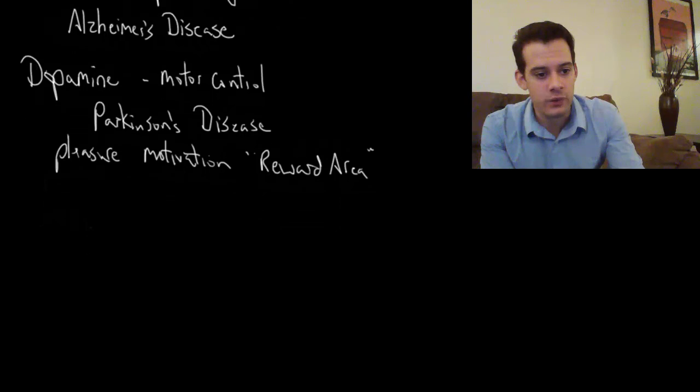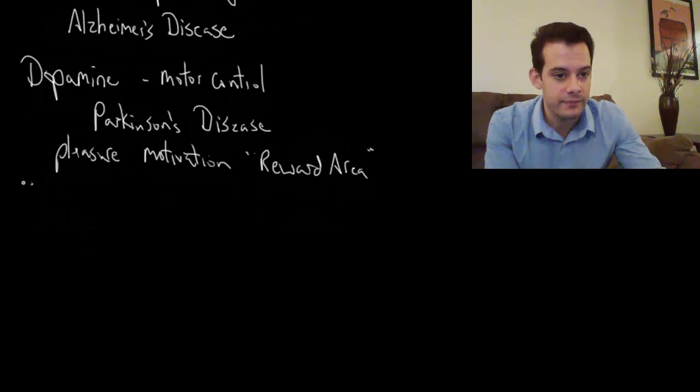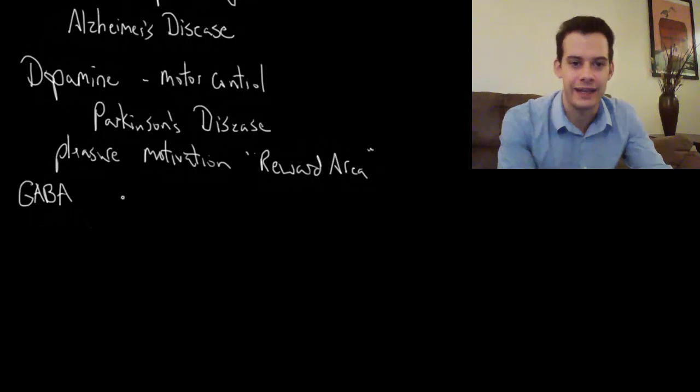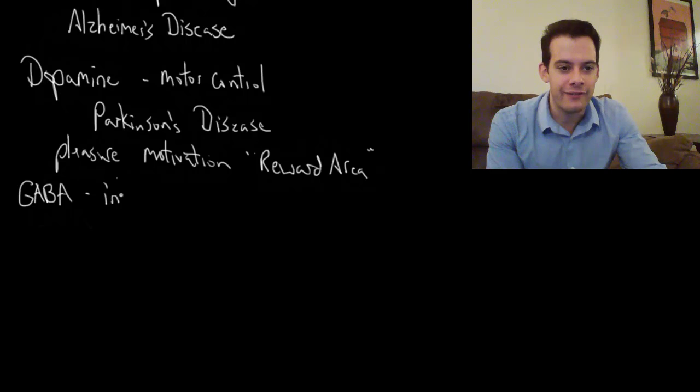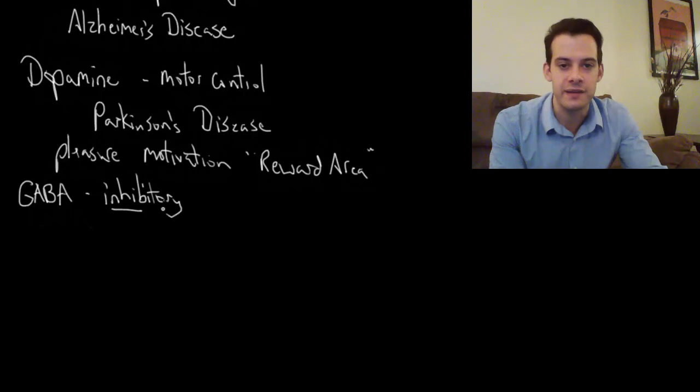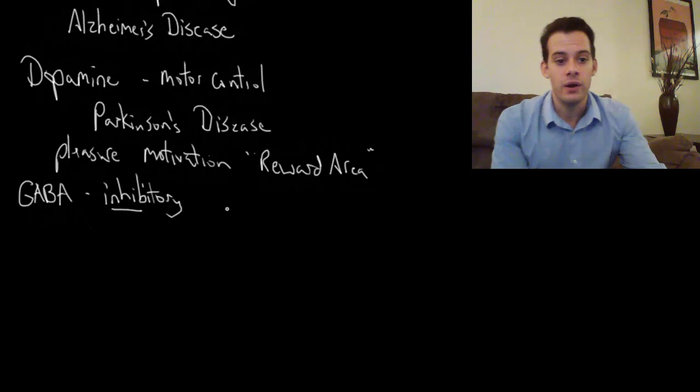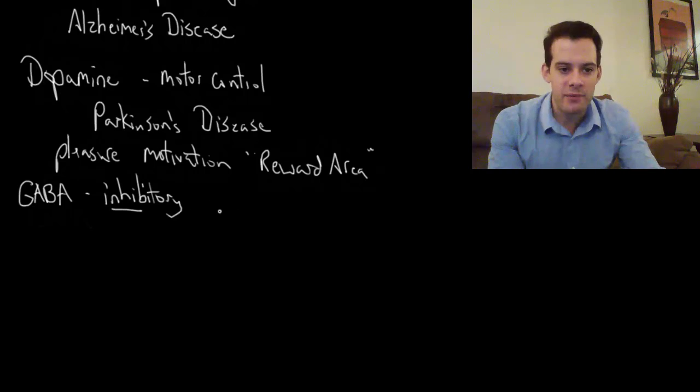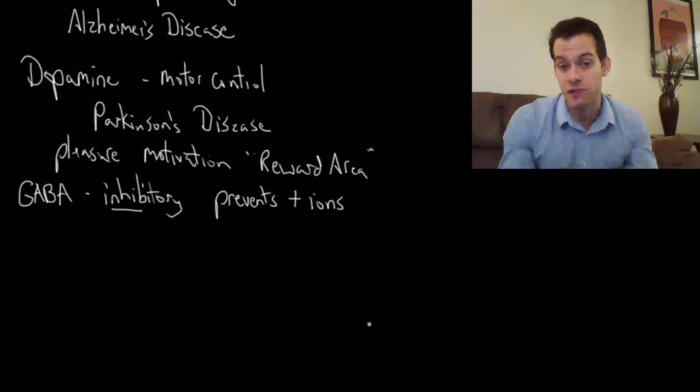The next neurotransmitter we'll introduce is GABA. This stands for gamma-aminobutyric acid. GABA is an example of an inhibitory neurotransmitter. What this means is that it inhibits function of the postsynaptic neuron. When GABA is released in a synapse it binds to receptors, and it prevents positive ions from moving into the postsynaptic neuron. It prevents the flow of these positive ions and this makes it harder for that next neuron to reach its threshold. That means it's going to be harder for this neuron to fire.